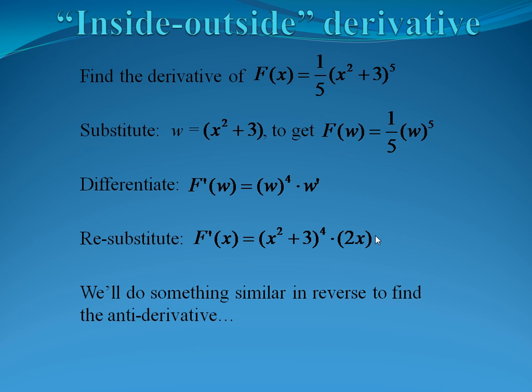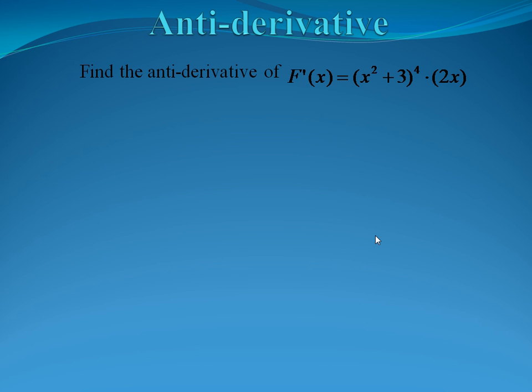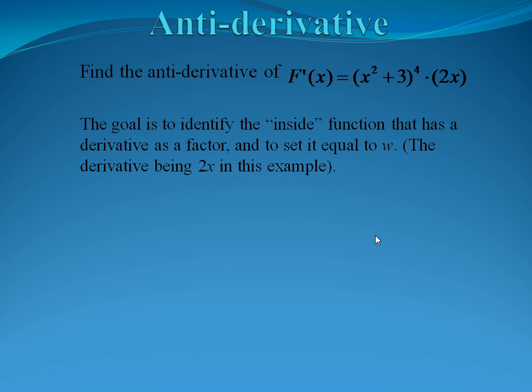Now we're going to do something very similar in reverse order to find the antiderivative. We're going to work with the same function. If we want to find the antiderivative of (x squared plus 3) to the fourth power times 2x, which was our original derivative, we should get back the original function. The goal is to identify the inside function that has a derivative as a factor and set it equal to w — we're looking for a function and its derivative so that when we find the antiderivative, we have all the right pieces.